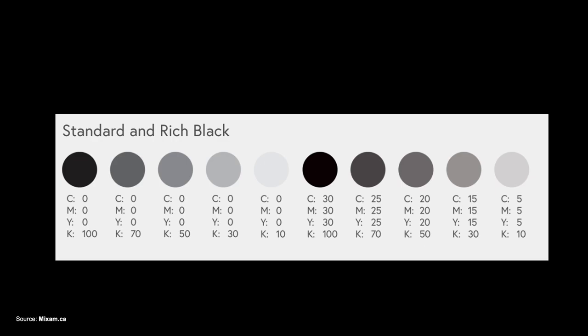Looking at the slide, the first half shows standard black — Key from 100% down to 10%. The second half, starting from C30 M30 Y30 K100 through to C5 M5 Y5 K10, is actually rich black. You can notice the rich black is more appealing visually, but the preference for text is standard black. They may look the same to a layperson, but from a printer's perspective they are very different colors.